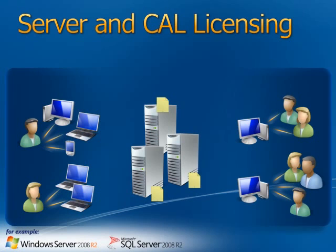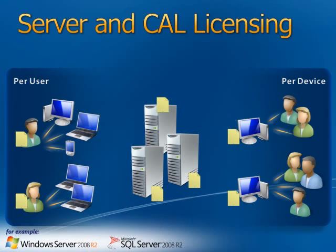CALs come in two types: User CALs and Device CALs. Where an individual user uses many devices to access the services of the server, we would need to purchase a User CAL, which would license them to access all three Windows Servers in the network. Where a device is used by many users, we would purchase a Windows Server Device CAL, licensing the device to access the services of the server, and it can be used by any quantity of users.